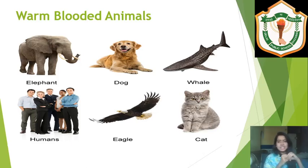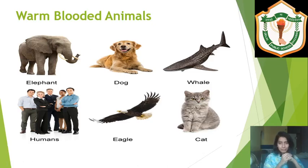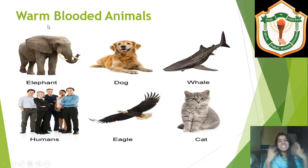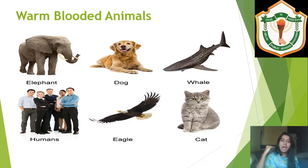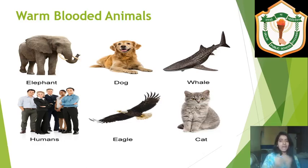When it is very hot outside, what happens to us? We start sweating. That is one mechanism by which warm-blooded animals maintain their body temperature. When sweat — which is water droplets — evaporates, this evaporation process takes away body heat and your body temperature remains maintained at 37 degrees Celsius.